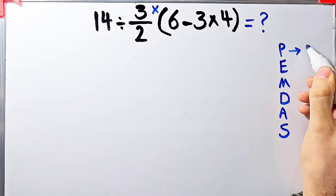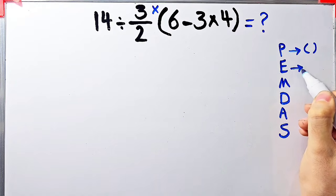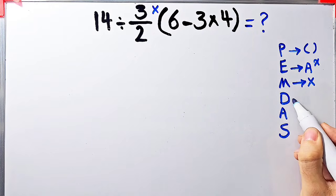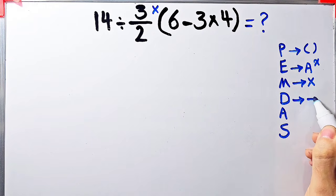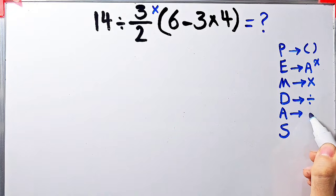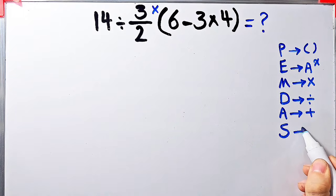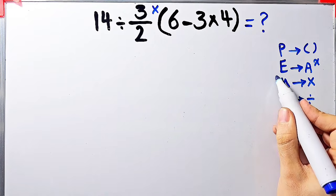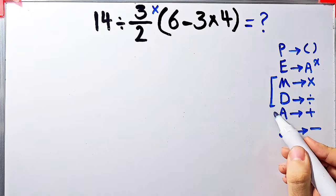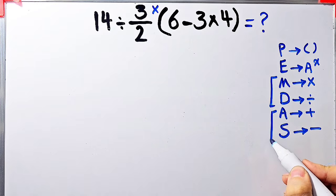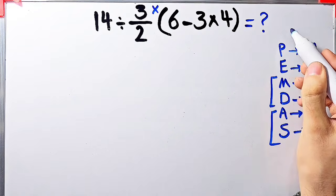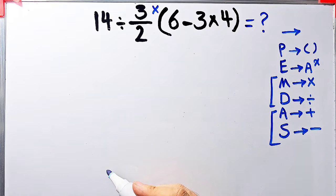In this rule, P stands for parentheses, E stands for exponent, M stands for multiplication, D stands for division, A stands for addition, and S stands for subtraction. Multiplication and division have the same level of priority. Also, addition and subtraction have the same level of priority. And when we have both in an expression, we start from the left and simplify the question.